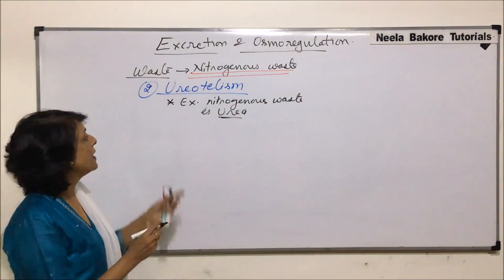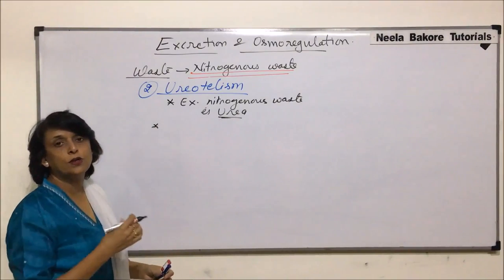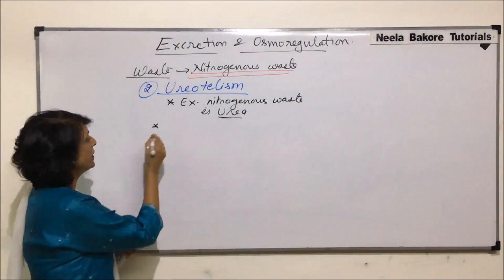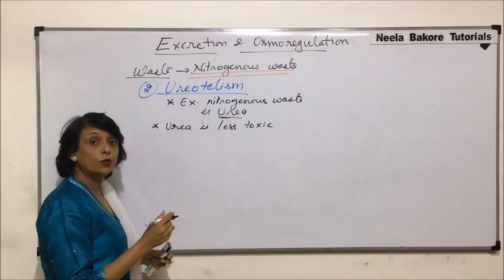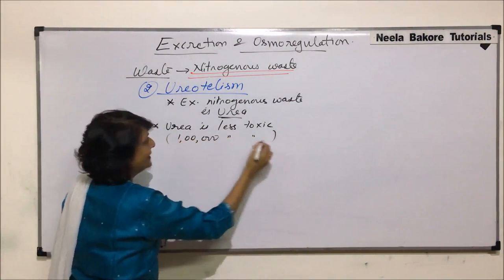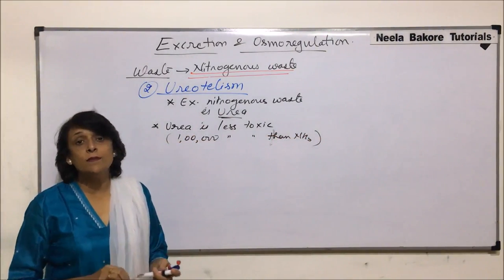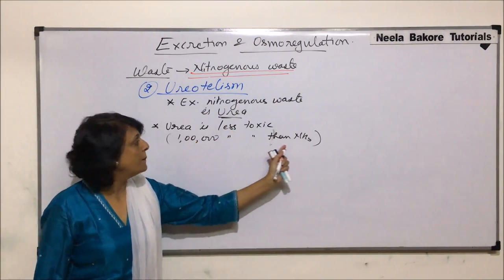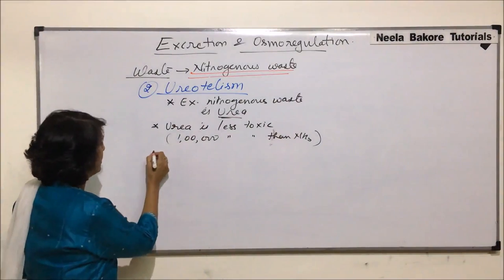We'll write the examples a little later. Now, what is the advantage of excreting urea over ammonia? Urea excretion is a better option for organisms that are terrestrial or cannot afford to lose much water. The first advantage is that urea is less toxic compared to ammonia — it is one lakh times less toxic than ammonia.